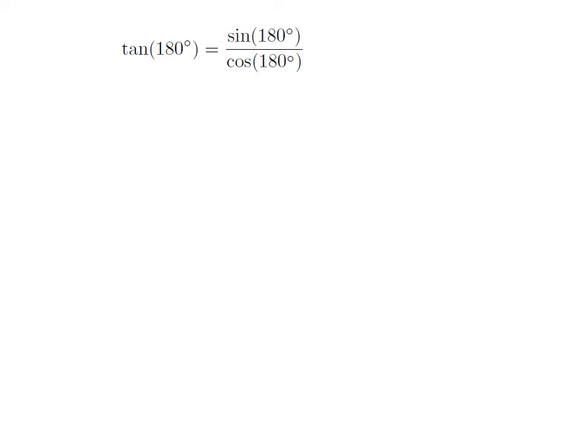So, tangent of 180 degrees is equal to sine of 180 degrees divided by cosine of 180 degrees.